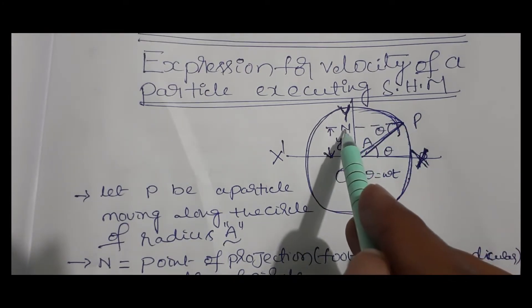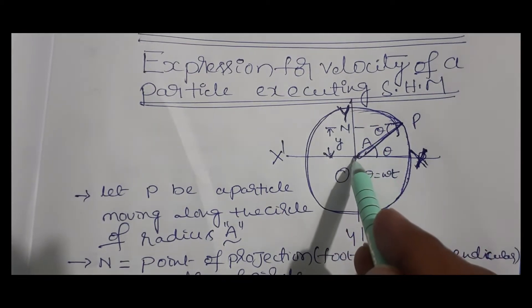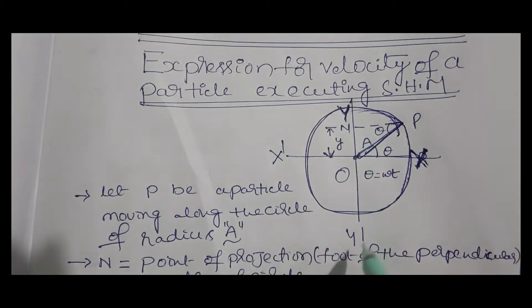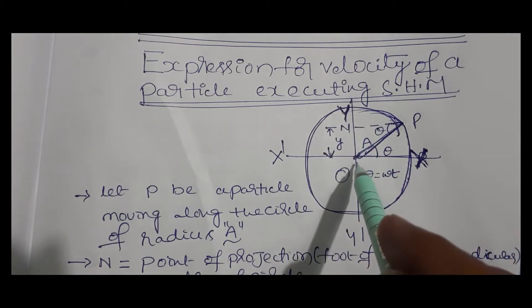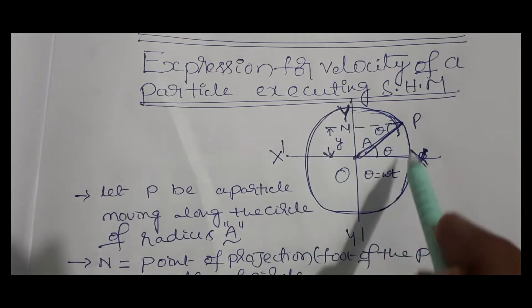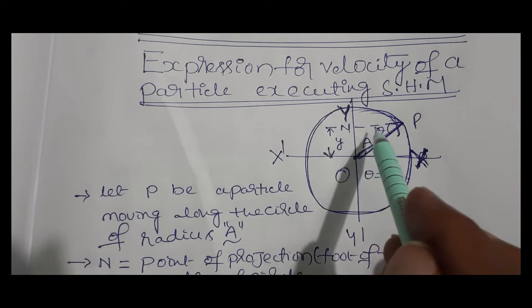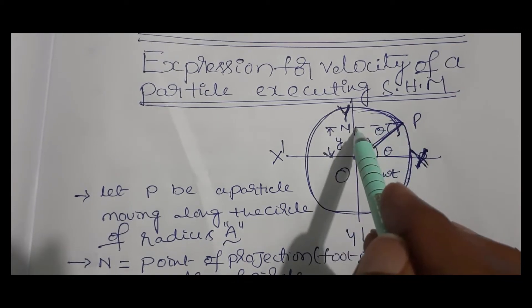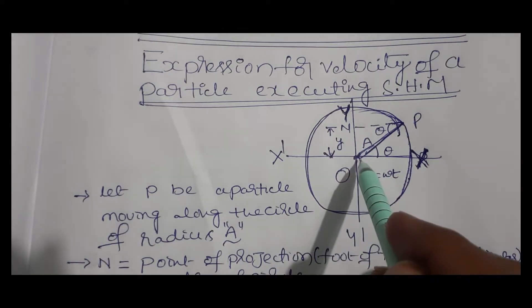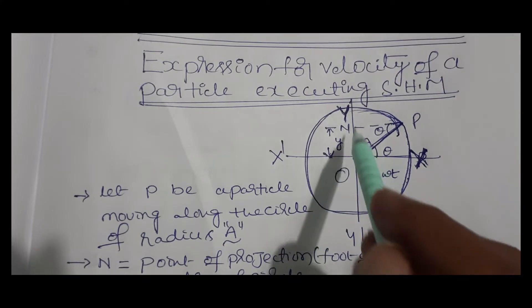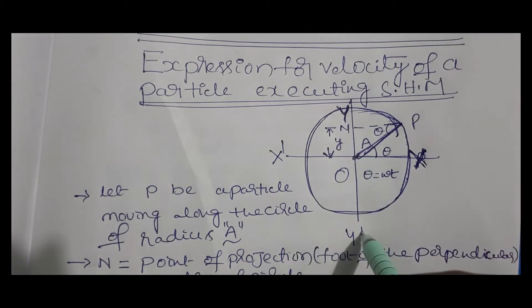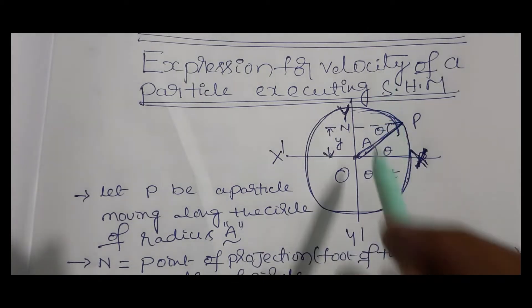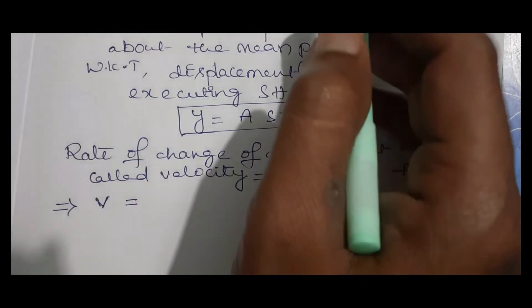When the particle P is rotating, the point of projection N — the foot of the perpendicular — can make a simple harmonic motion about the fixed mean position O, moving up and down: from O to y, y to O, O to y', and y' back to O. As P rotates, point N executes simple harmonic motion about the mean position O in this manner.